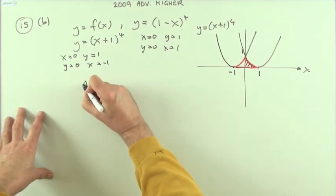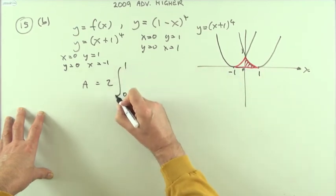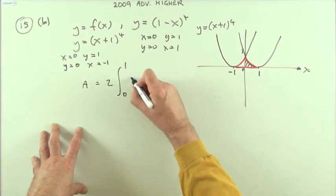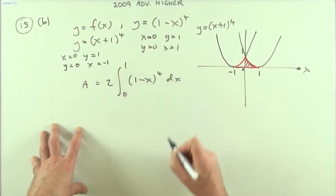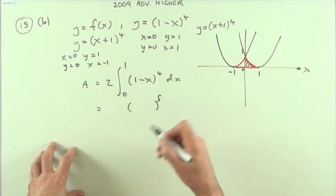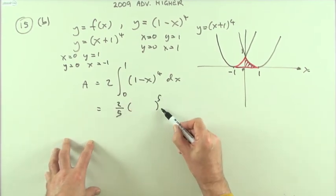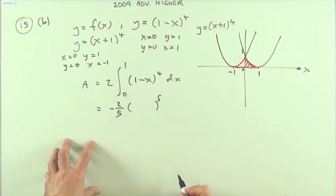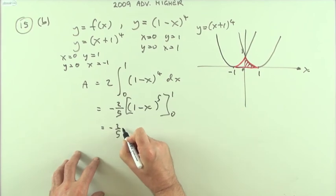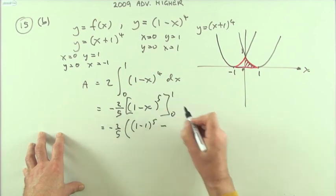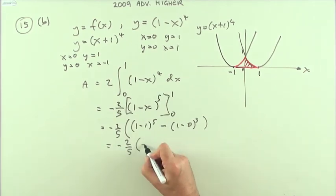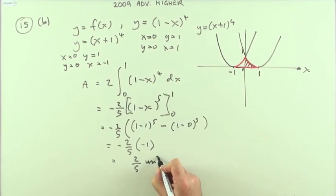The area equals twice the integral from 0 to 1 of the upper curve minus the lower. I'll use 1 - x^4 since I'm using this side, minus y=0, so it's just (1 - x^4) dx. That's easy — add 1 to the power and divide: x - x^5/5, but dividing by the inner derivative of negative 1 makes it negative. Evaluating from 0 to 1 gives negative 2/5 times (0 - 1) = negative 2/5 times negative 1 = 2/5 square units.